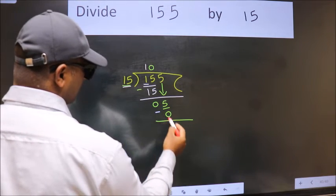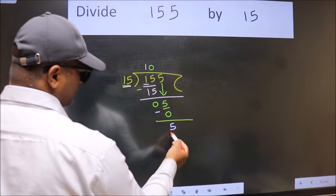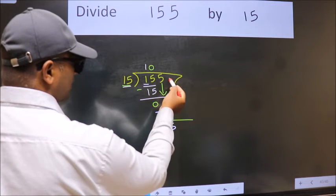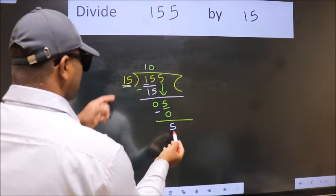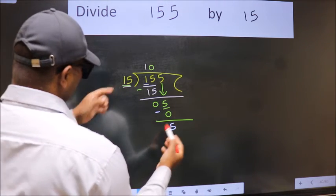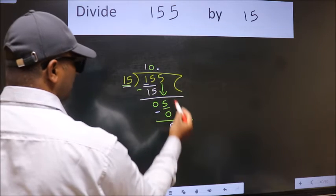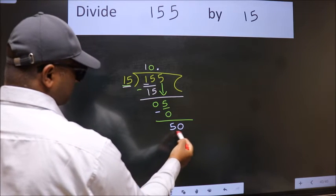Now we subtract. We get 5. Over here, we did not bring any number down. And 5 smaller than 15. So now we can put dot and take 0. So 50.